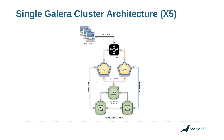In this set of videos, we are only setting up one MaxScale server to avoid overcomplication, but setting up a second MaxScale for a Galera cluster is very simple — you just duplicate the config file on the second server. Then you configure your load balancer to talk to both MaxScale servers, and MaxScale takes care of the rest.